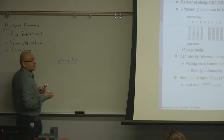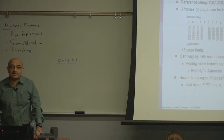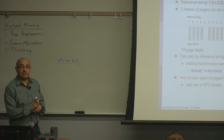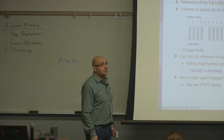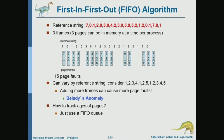The first-in, first-out algorithm gave 15 page faults. What's the weakness of FIFO? It doesn't take into account how frequently a page is referenced. It has no notion of whether a page is in demand or not. It just replaces the page that got loaded first, even if that page is very popular and the process keeps referencing it.